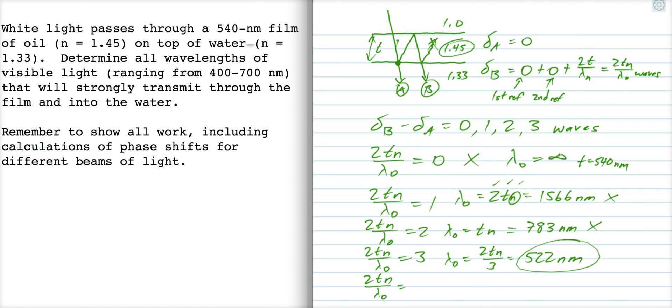If we try 2T over lambda naught equals 4, we get lambda naught is equal to 2T over 4, which is 392 nanometers, which is just barely outside of our range. That's no good. Now if we keep going to 5 and 6 and 7, we're just going to keep getting wavelengths that are lower and lower and lower. So this is the only one here that's going to be a wavelength in visible light. That means we're done.